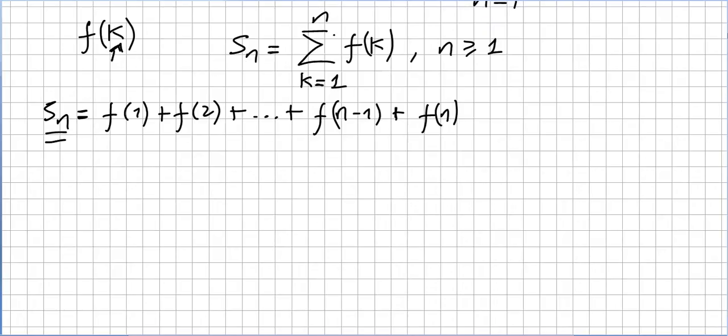So S_n is the summation from k equals 1 to n of f(k). This began in 1 and finished in f(n-1) plus f(n). Let us say now